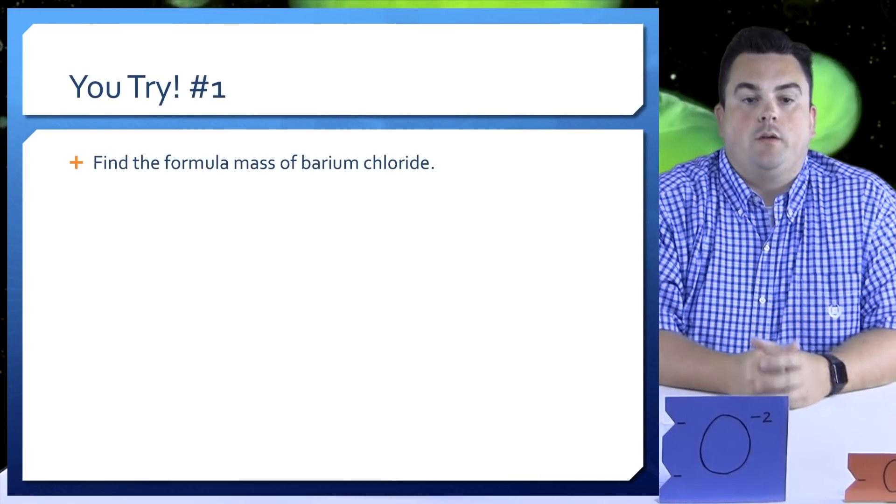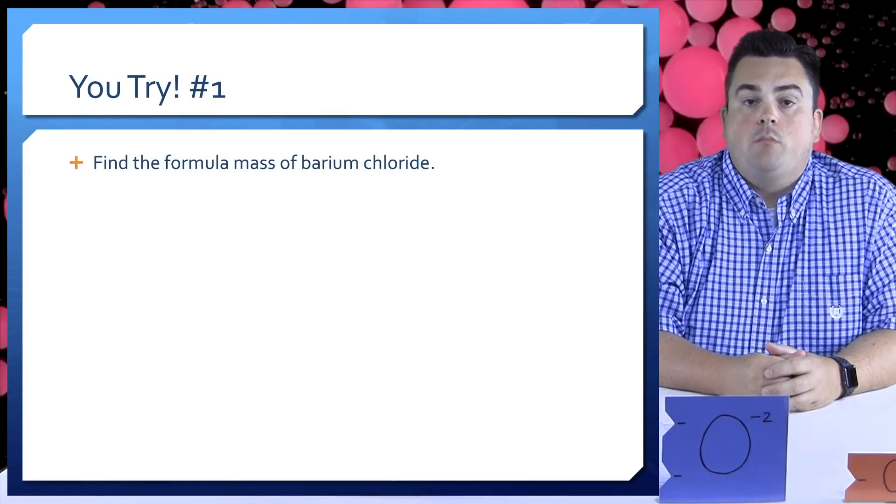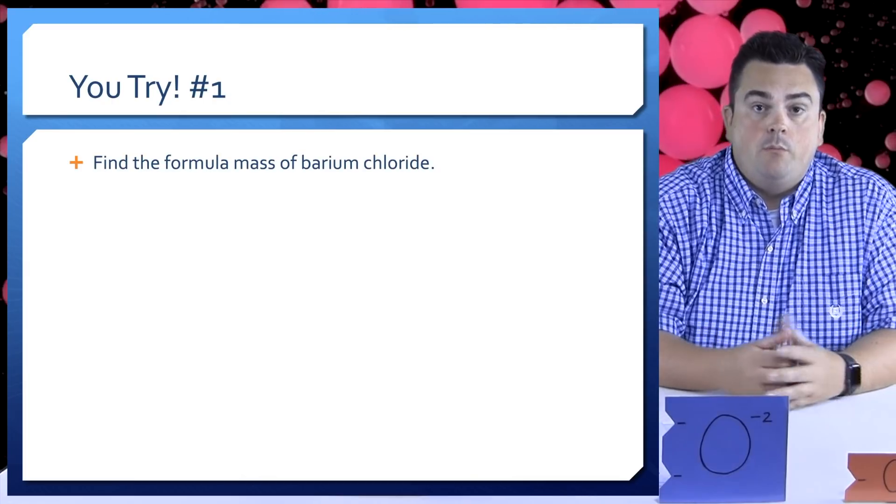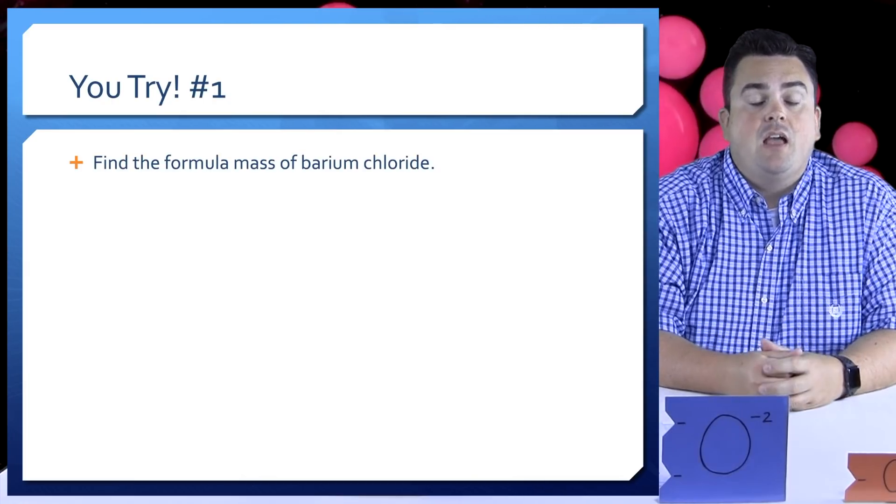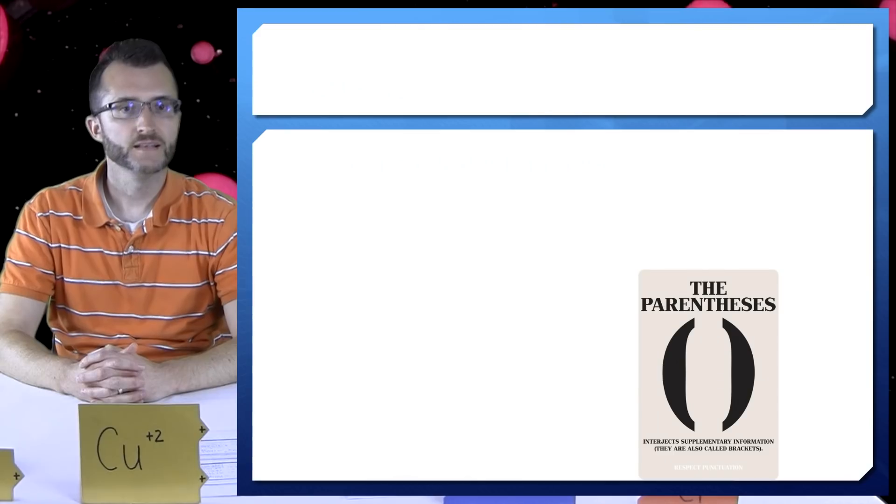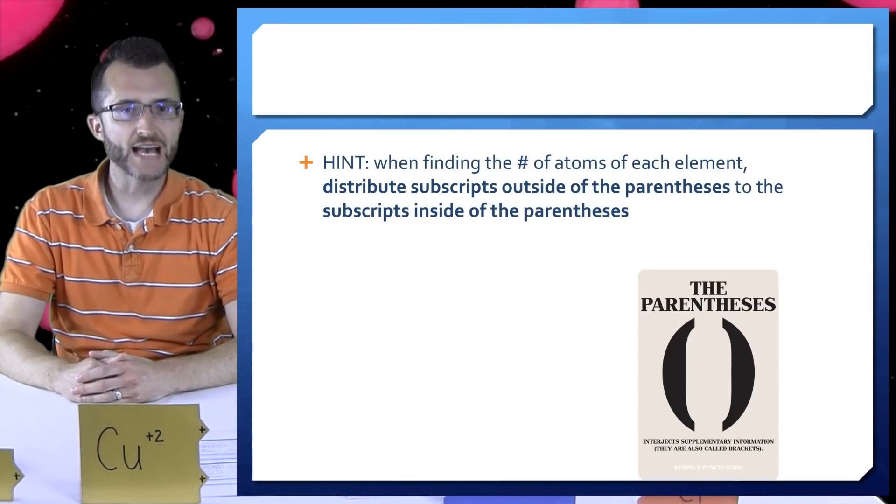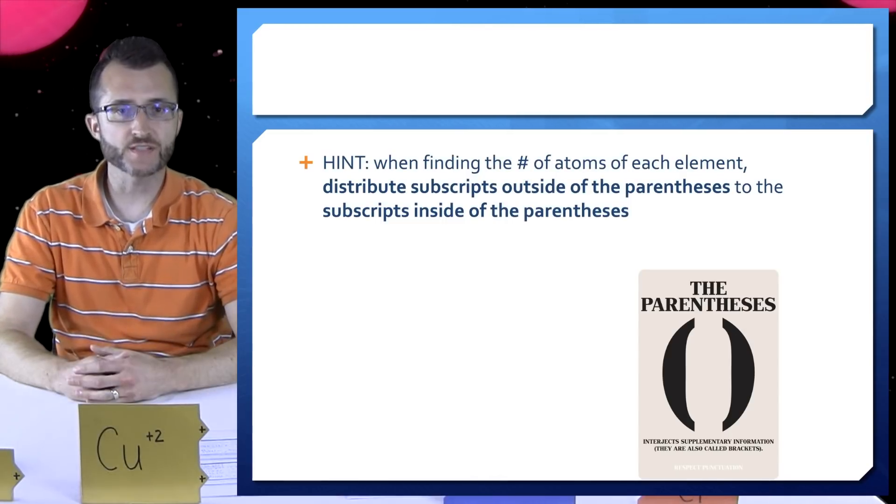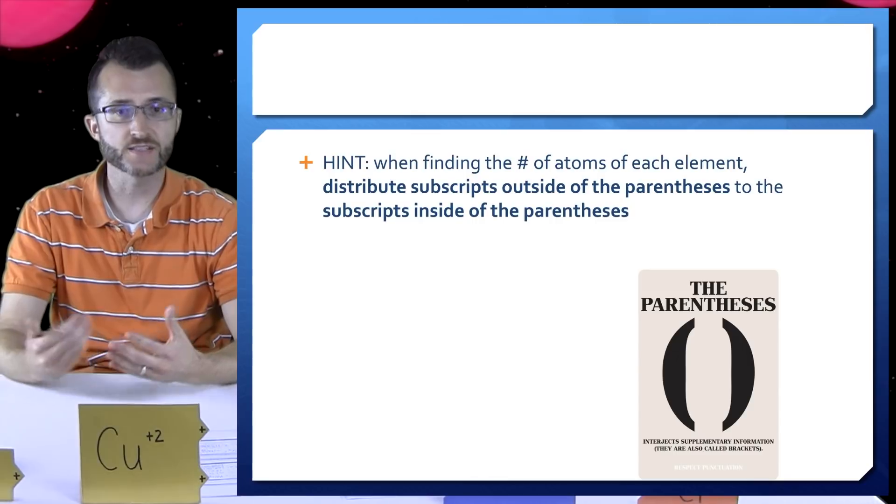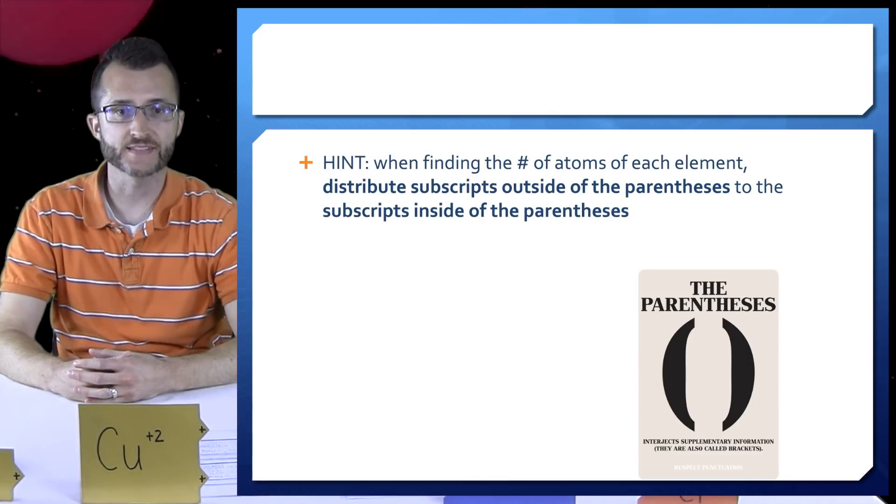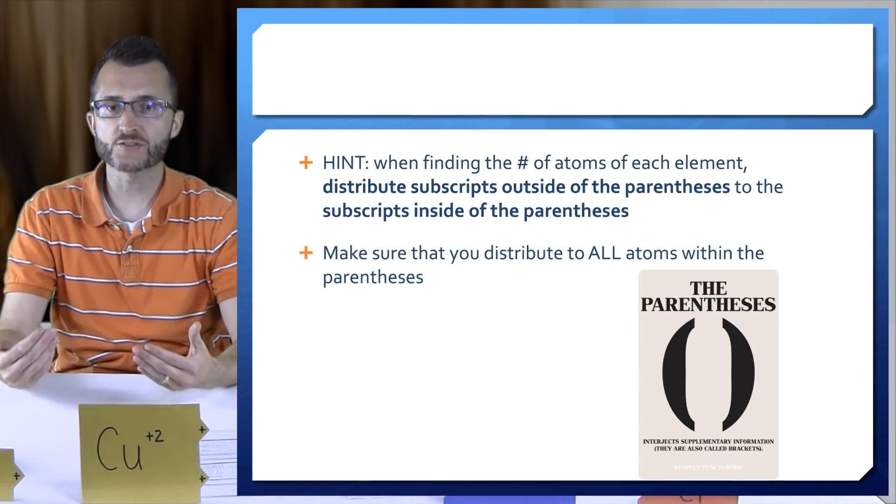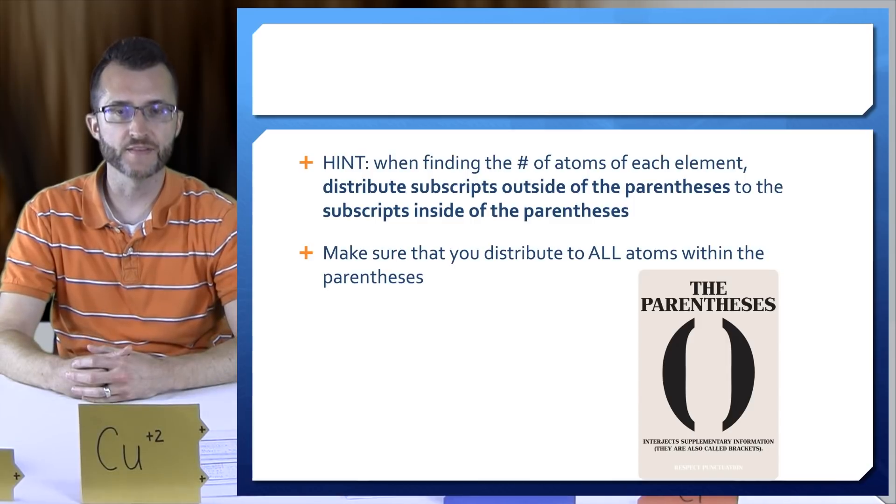You try number one. Find the formula mass of barium chloride. Make sure you get a proper formula, make sure you use your reference tables and show all your work. Hint: when finding the number of atoms of each element, distribute subscripts outside the parentheses to the subscripts inside of the parentheses. Make sure that you distribute to all atoms within the parentheses.